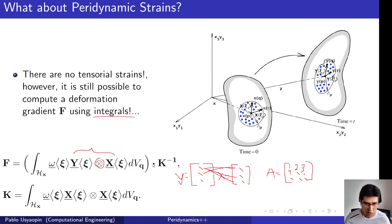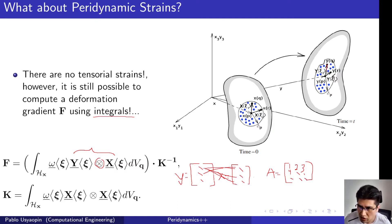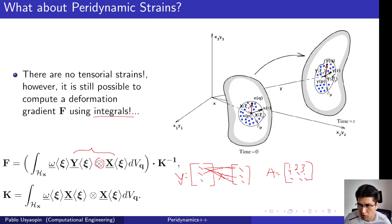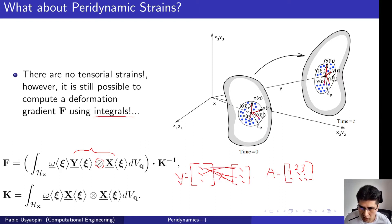So this matrix A will be multiplied by another matrix called K, which is also defined here. From this expression we can see that the deformation gradient is built using the current configuration y of a particular bond, times the initial configuration of the same bond. We then go to the next bond and so on for every bond inside the radius delta — the horizon — and this is how we build the deformation gradient quantity using peridynamic equations.